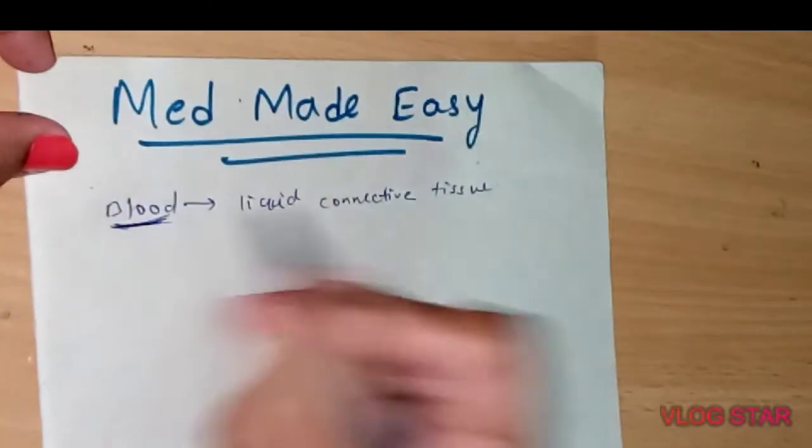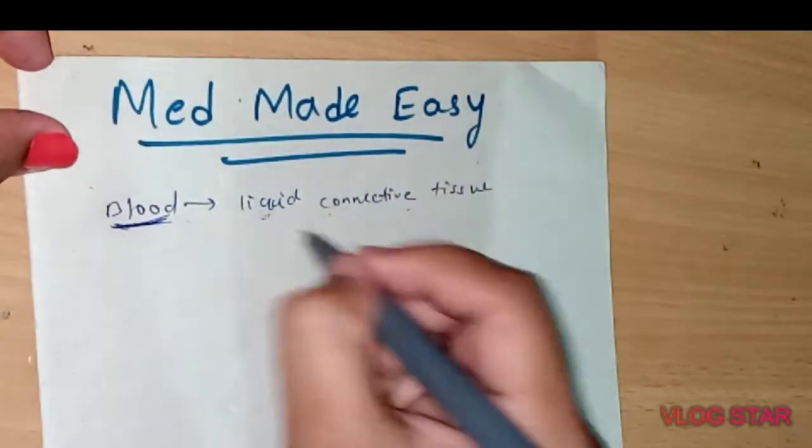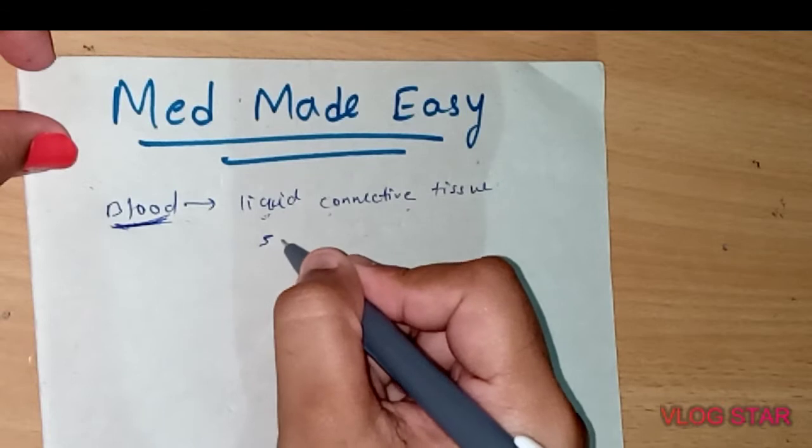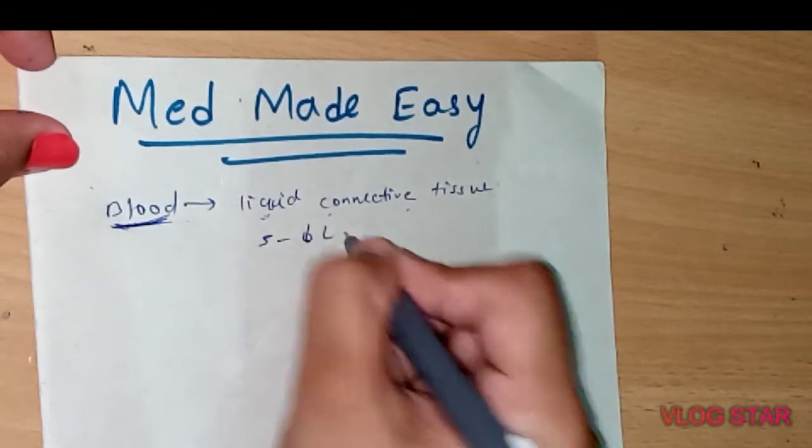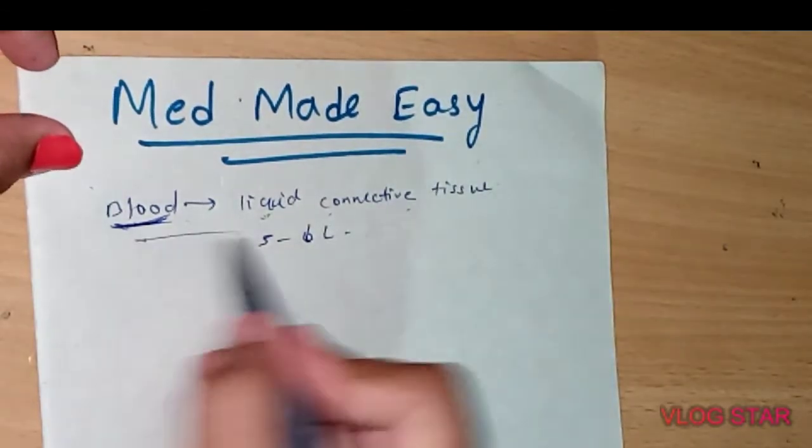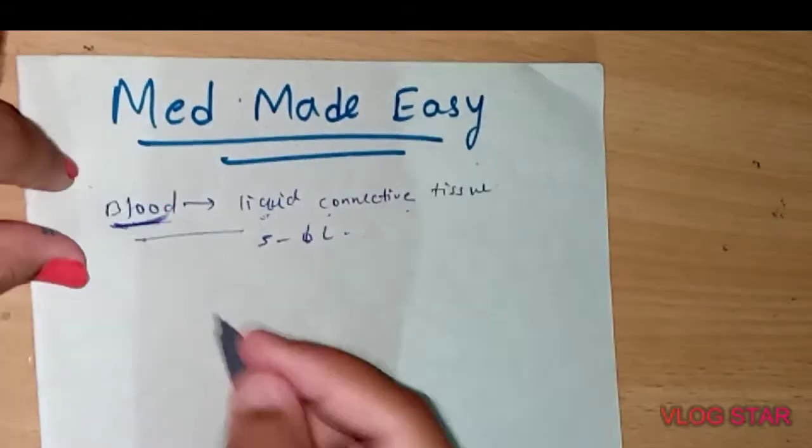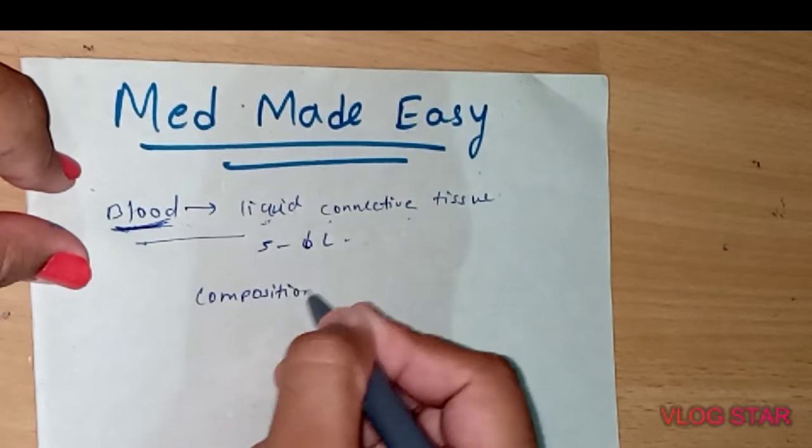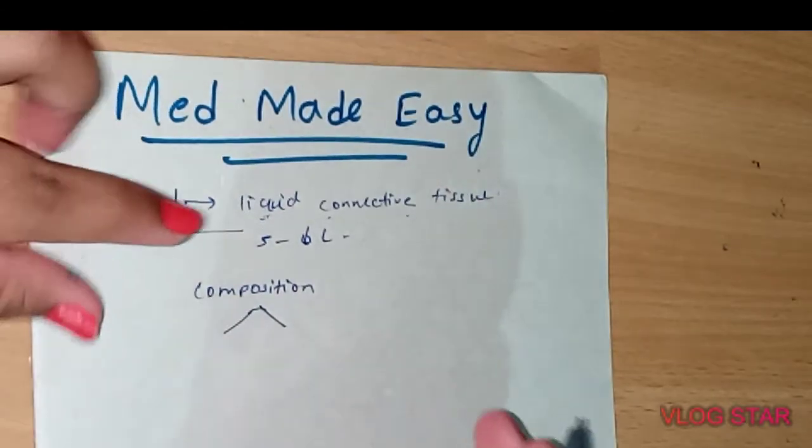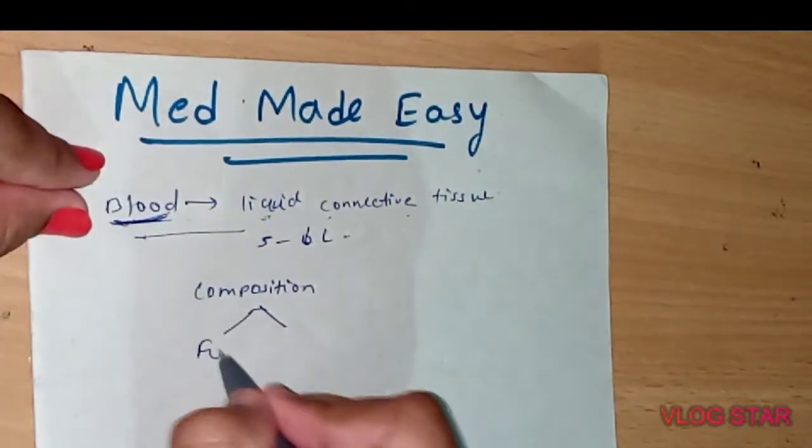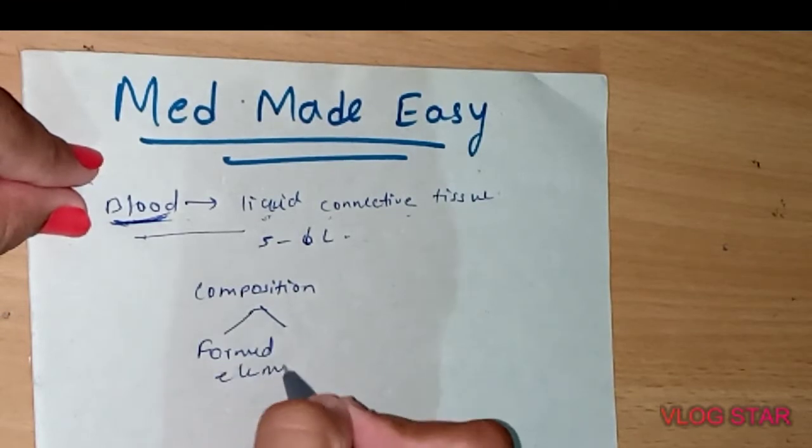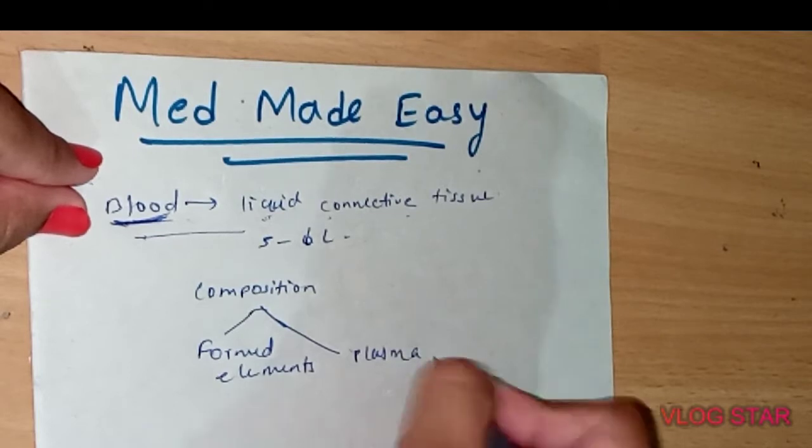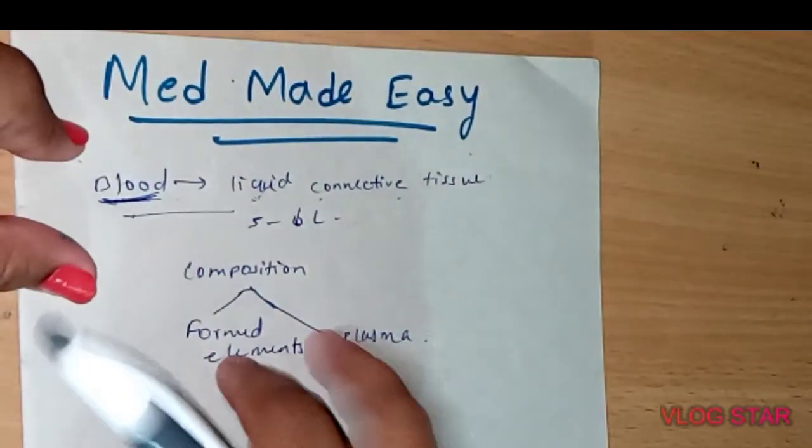When they ask about blood, what will you write? Blood is a liquid connective tissue, and normally a human consists of five to six liters of blood. This is the main thing you have to write. Coming to composition, it has two components: the first is formed elements and second is plasma.